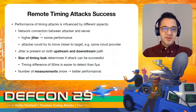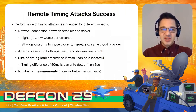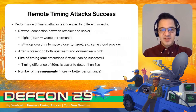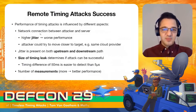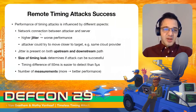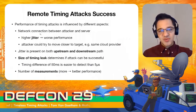There are several factors that influence the success rate of a timing attack. The first is the network connection between the attacker and the victim server — in particular, the higher the jitter, the worse the performance. The attacker can mitigate this by moving closer to the target, for instance by renting a server in the same cloud provider. Notably, jitter is present both on the upstream path (in the requests) and the downstream path (in the responses).